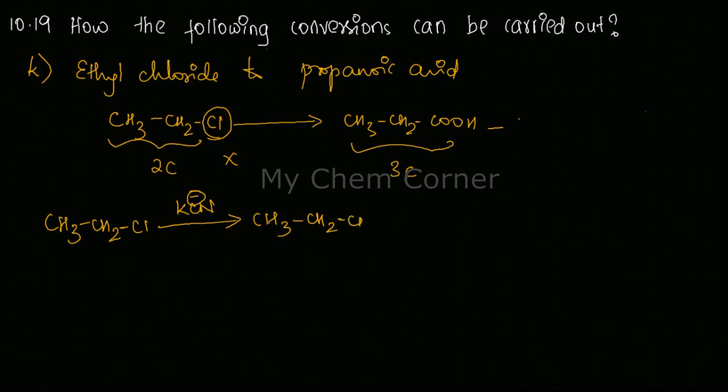So you get a CN over here. Now from CN, you got an extra carbon here. It needs to get converted to a carboxylic group, and this can be done by a very simple acid hydrolysis process.